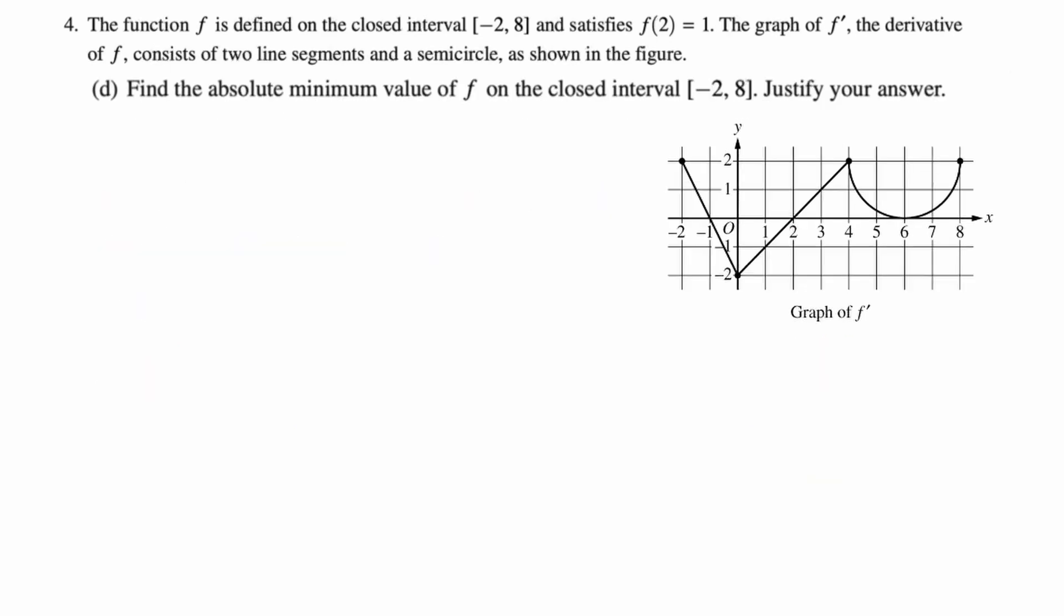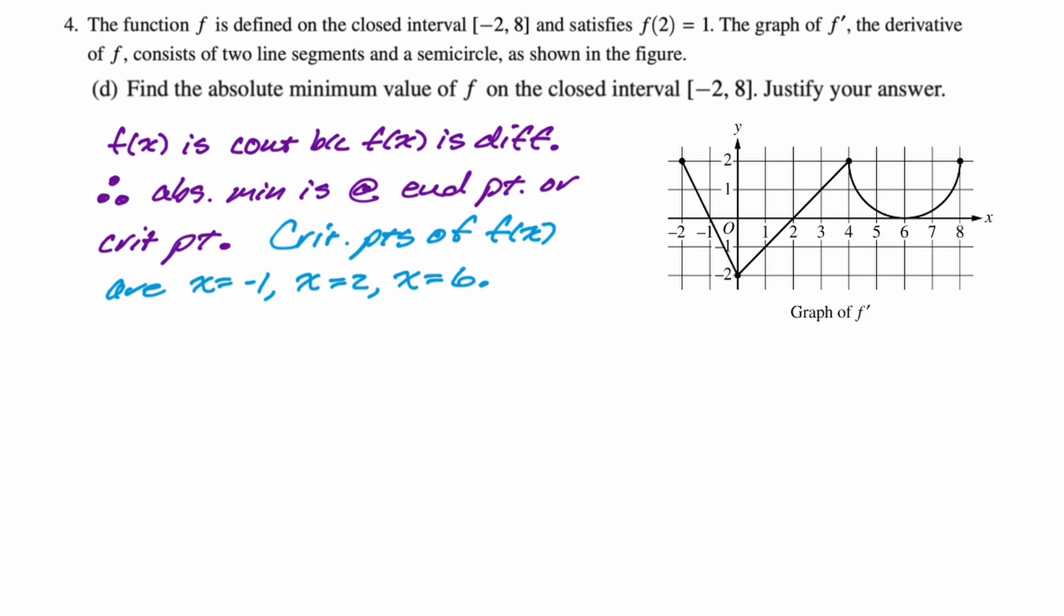All right, part d, find the absolute minimum value of f on the closed interval negative two to eight, justify your answer. I'm going to use a candidates test. This is a classic candidates test problem. So first up, f of x is continuous because f of x is differentiable. What does that mean? That means that the absolute minimum is at an end point or a critical point. Since we have the graph of f prime, we just know the critical points are negative one, two, and six.